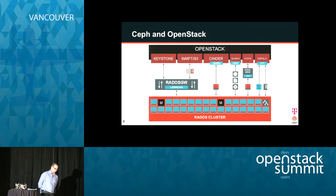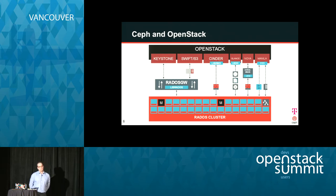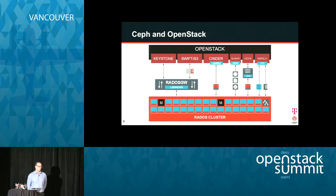Where do we have a connection between OpenStack and Ceph? On one hand, we have the object service — S3 or OpenStack Swift interfaces — which may make use of Keystone for user identification. On the other hand, we have Cinder with LibRBD, and Glance as an image store, which may use RBD or an object store in the back end. We also have Nova to run the services and the hypervisor, and Manila — though it's a little unclear which component of Ceph will be used between Manila and CephFS.